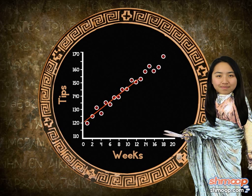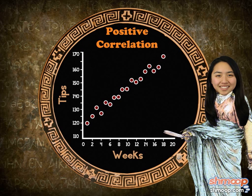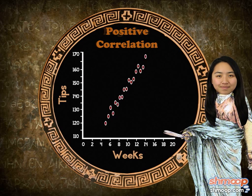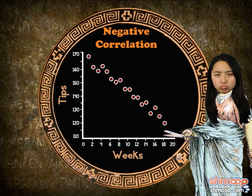We can see Shaina's tips are increasing, which means there is a positive correlation — as one variable increases, so does the other. That's positive. Negative correlation looks like this.